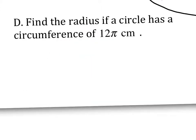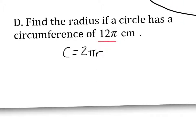And notice in example D, we are now asked to find the radius rather than the diameter. So now I begin with the formula that uses the radius, 2 pi r. I'm going to substitute 12 pi in for C.